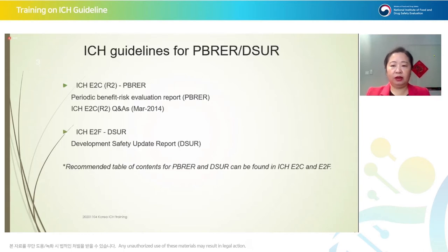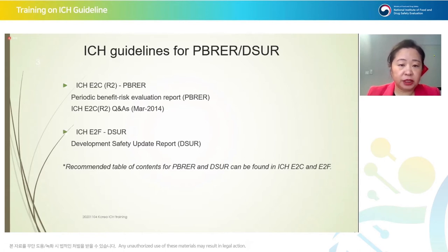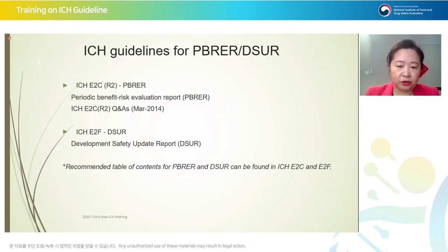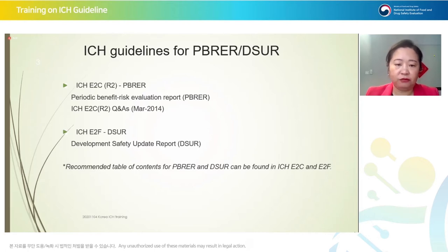With regard to PBIR and DSUR, there are two main guidelines from ICH. The ICH E2C is for the periodic benefit-risk evaluation report, abbreviated as PBIR or sometimes just PBER. There is also a supporting questions and answers document organized by ICH. For the development safety update report, there is an ICH E2F guideline. In both guidelines, you may find a template or table of contents which are very helpful for daily work.